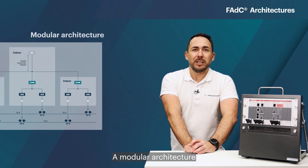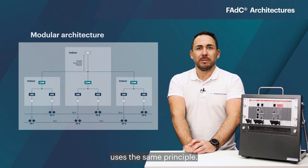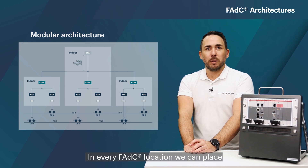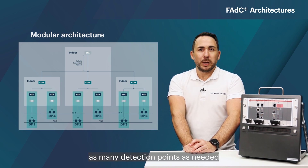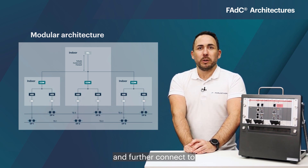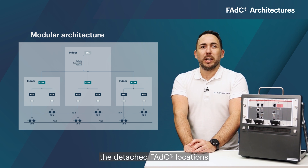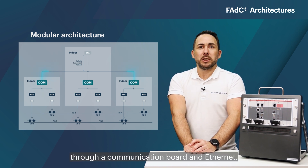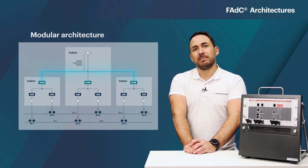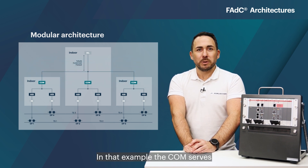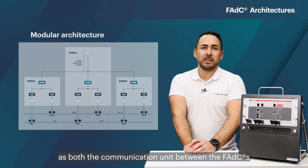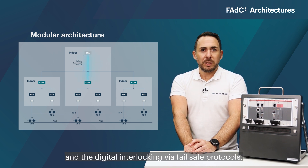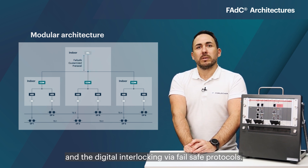A modular architecture uses the same principle. In every FADC location we can place as many detection points as needed and further connect to the detached FADC locations through a communication board and Ethernet. In that example the COM serves as both the communication unit between the FADCs and the digital interlocking via failsafe protocols.